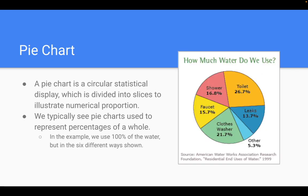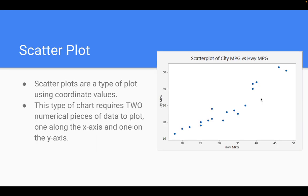Alright, your next type of display we're going to look at is a pie chart. So this is a classical piece of display that you are used to seeing. A pie chart is simply a circular statistical display that is divided up into slices to illustrate numerical proportions. So the larger a number, the larger the slice it would have. We typically see pie charts representing percentages of a whole. So generally, like as you see there, 100% of the water is split into six different categories.